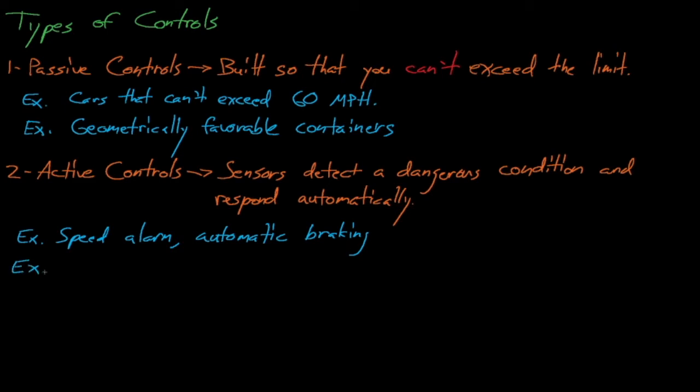In criticality safety, an example of an active control could be a scale that weighs the amount of solution entering a tank and then responds to automatically close a valve and shut off the flow of solution if it detects that the tank is too full.